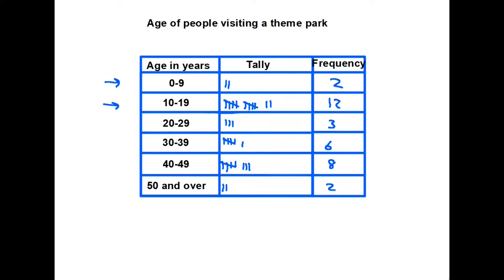Once we have completed our questionnaire, if we want to make the information look a little tidier and easier to read, we can add a third column which is the frequency column. All we do is add up the tally, put the totals in the last column, and we have a frequency table.